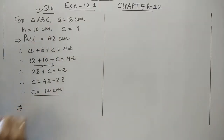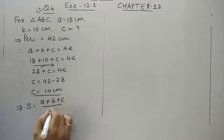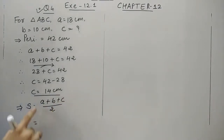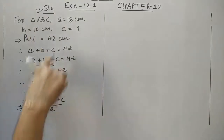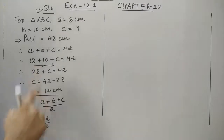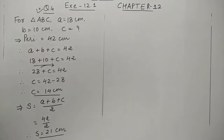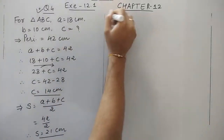By using Heron's formula we can find the area. Before that, let's find the semi-perimeter, that is A plus B plus C divided by 2. Since the perimeter is already 42, we can directly write S equals 21 cm. The perimeter is given, so it is quite easy to obtain the semi-perimeter.